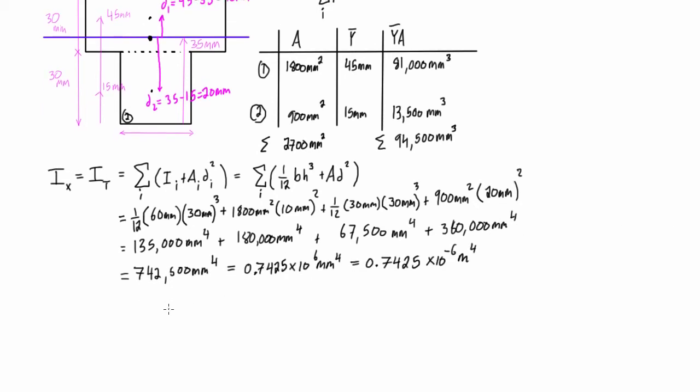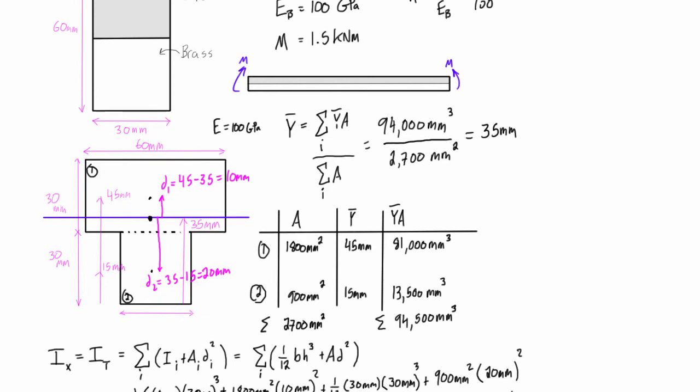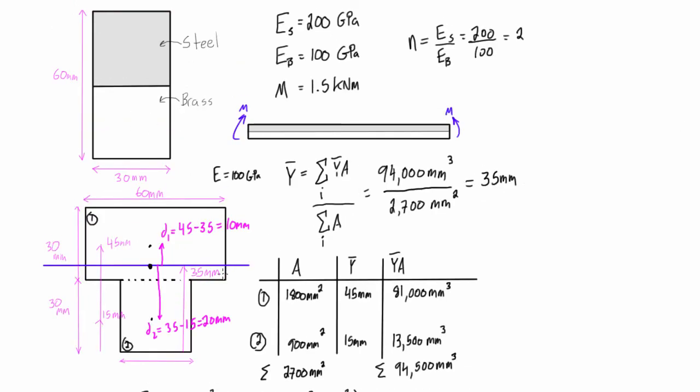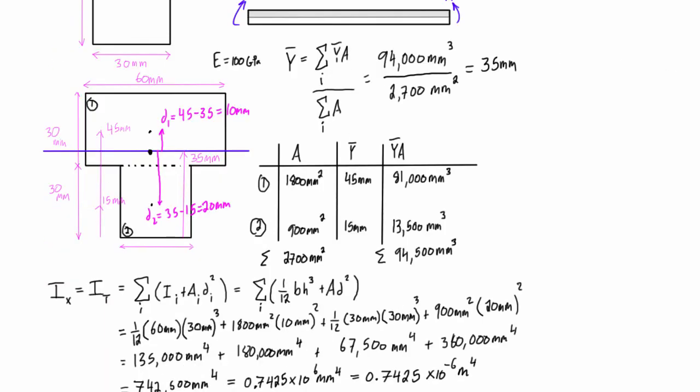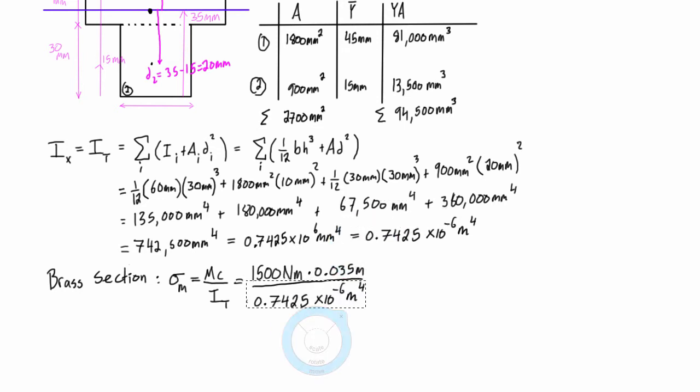So the brass section was the section here at the bottom, and the C, the max distance here is going to be 35 millimeters, and the applied moment was 1.5 kilonewton meters. So we can drop all that in, and that works out to 70.7 times 10 to the 6 newtons per meter squared. And right, there's 2 meters on the top, 4 on the bottom, so that's where that comes from, and that 10 to the 6 newtons per meter squared is just megapascals, so that's 70.7 megapascals.